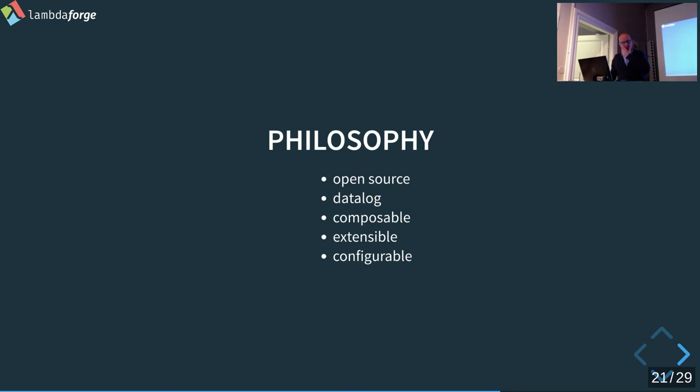For instance, in DataHike we have four storage protocols — in-memory, file-based, LevelDB, and Postgres. If you want Cassandra, you can just write the protocols for it and add it there. It's its own component. So that's composable and extensible. We also want it to be really configurable — you can say at the start: I want no history, I don't want a schema, etc. And this is now possible.